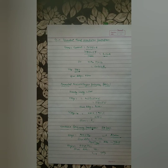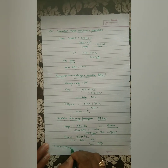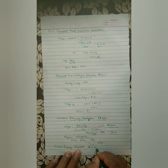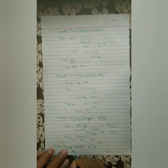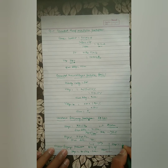Similarly, we have over frequency protection (81G OF). Stage 1 is set at 50.5 Hz with a time delay of 1 second (alarm), and Stage 2 is set at 51.5 Hz with a time delay of 2 seconds (trip). The machine must be operated within this frequency range to remain safe.